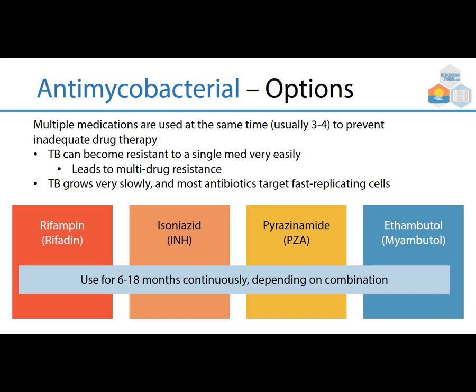TB grows very slowly, and most antibiotics target fast-replicating cells. So the four main drugs are rifampin (Rifadin), isoniazid (INH), pyrazinamide (PZA), and ethambutol (Myambutol). These are used for six to eighteen months continuously, depending on the combination.